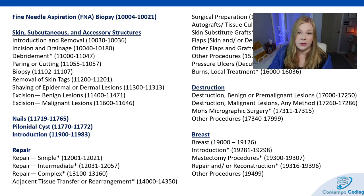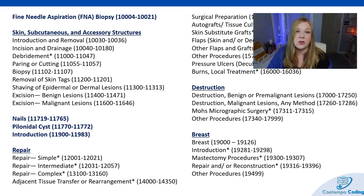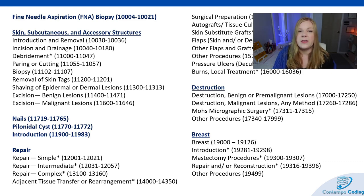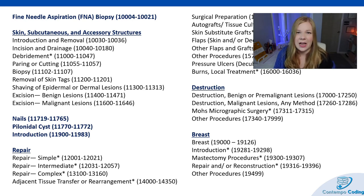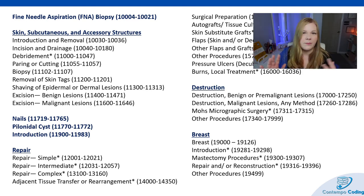After that, we have debridement codes. You not only need to know the location, but how deep the debridement was — was it subcutaneous tissue, was it muscle tissue? You also need to know the sizing and understand calculating square centimeters. For example, if a provider documents a wound that was 3 cm by 3 cm, you calculate 3 × 3 = 9 square centimeters. That's the size used for coding. The provider does not need to document square centimeters — they just document the area, such as 3×4 or 5×10, and you produce that calculation.